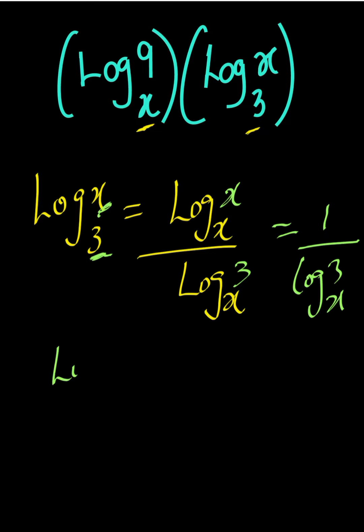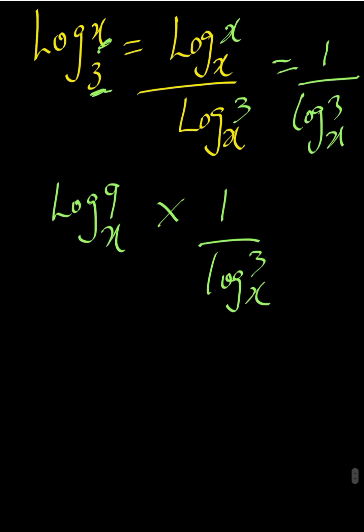So we are now having logarithm of 9 base X multiplied by 1 over logarithm of 3 base X. So we can go on logarithm of 3 to base X.